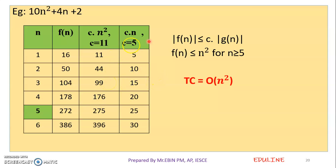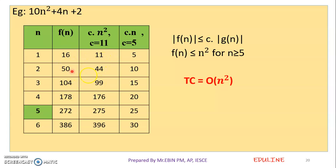This is the condition satisfied: f of n less than or equal to c into g of n. We need c equal to 5 to satisfy the condition. If c into n squared, f of n value equals 50, 44 is equal to 50, 99 is equal to 104. So that can satisfy from the 5th point within this.